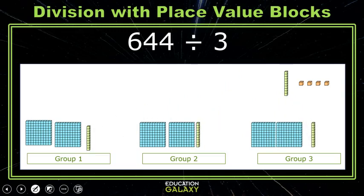We can divide that into 10 ones and combine with 4 ones, so now we have 14 ones. We can divide those into our 3 groups. That will put 4 ones in each group, but there will be 2 ones left over. So our answer would be 214 with a remainder of 2.